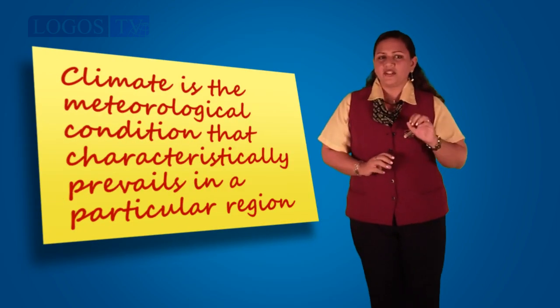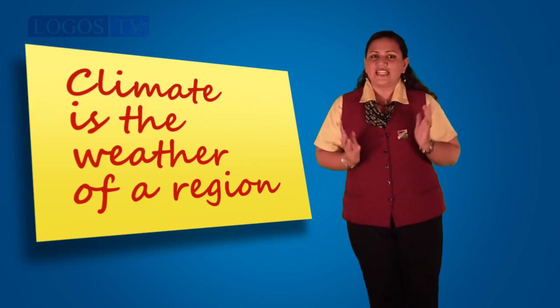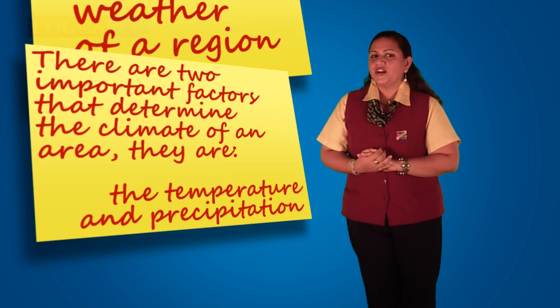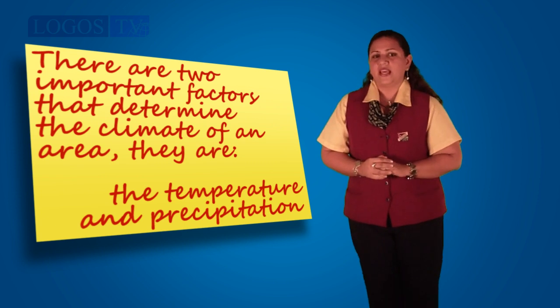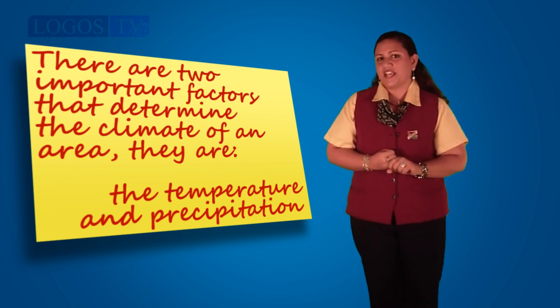In order to understand this theme, we need to know what climate is. Do you know what climate is? Climate is the meteorological conditions that characteristically prevail in a particular region. In other words, climate is the weather of a region. There are two important factors that determine the climate of an area: temperature and precipitation.